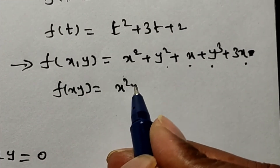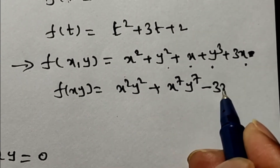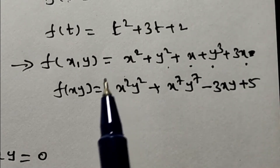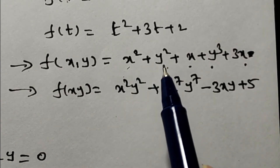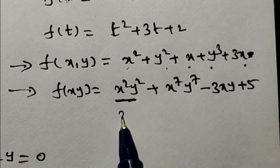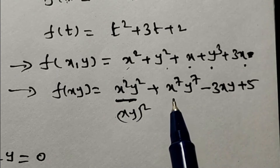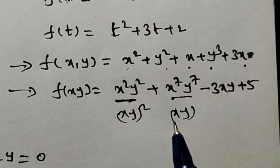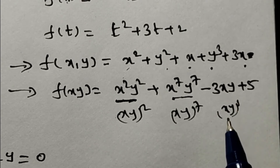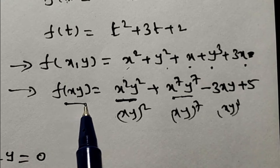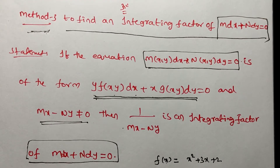f(xy) is different from f(x, y). For example, f(xy) is x²y² + x⁷y⁷ - 3xy + 5. The difference is that here x²y² means (xy)², and the degrees of x and y must both be the same. So x⁷y⁷ means (xy)⁷. It is a function of the product xy, whereas f(x, y) is a general function of two separate variables.